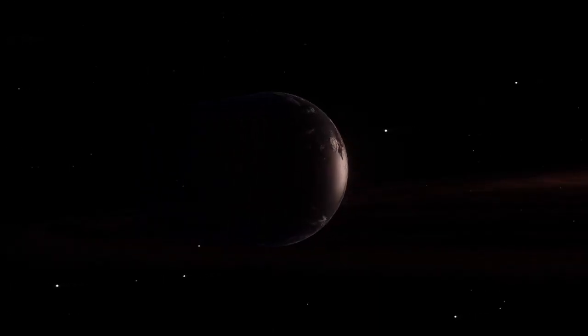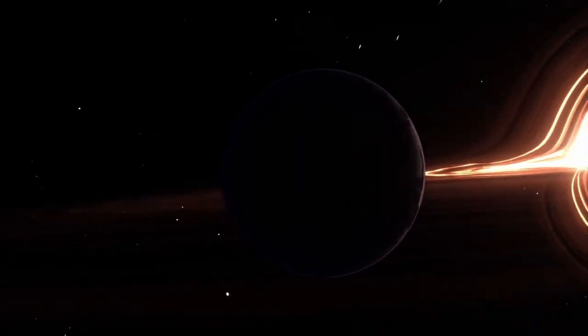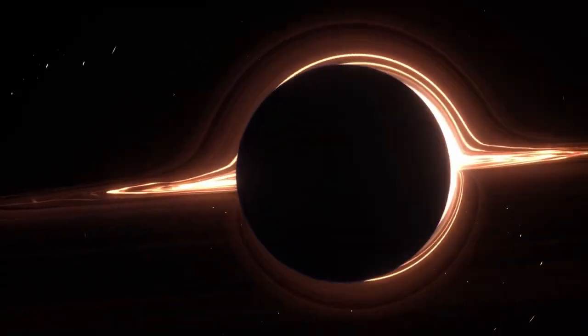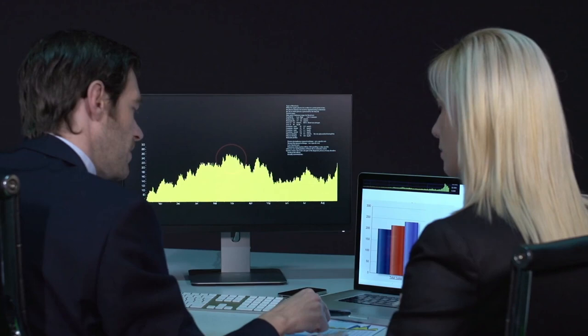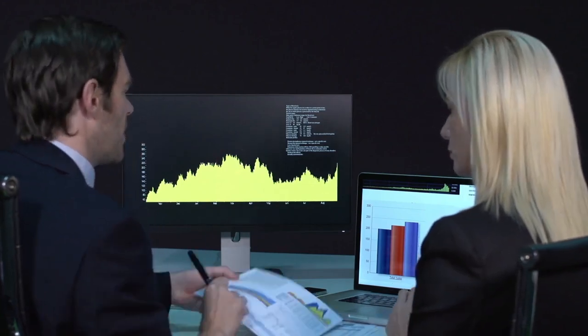Despite its tantalizing placement, Proxima b has remained cloaked in uncertainty, especially concerning its ability to support an atmosphere or life. Its proximity to a volatile, flaring star raises serious concerns.